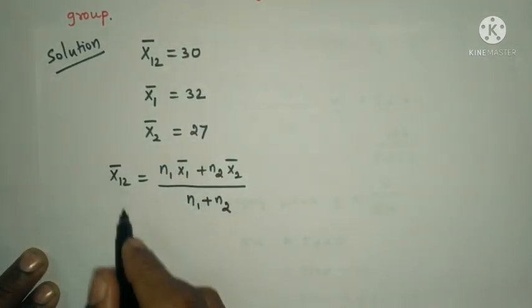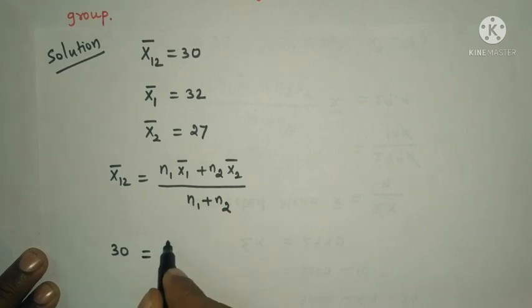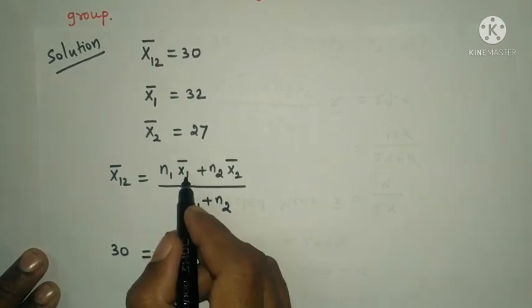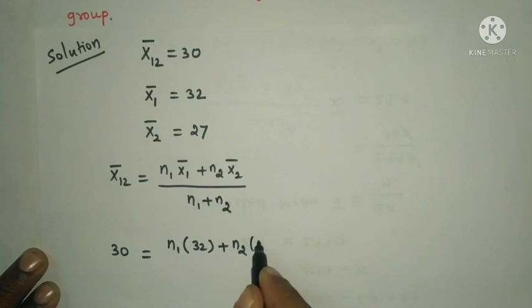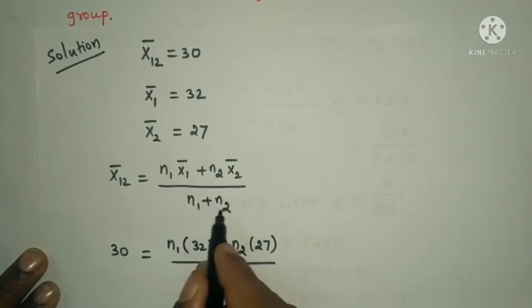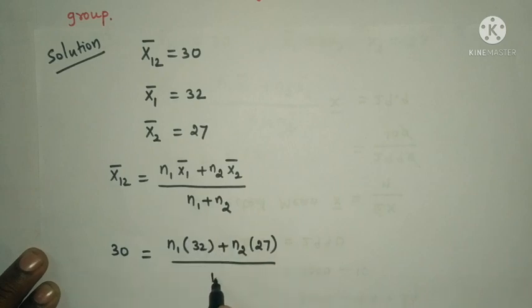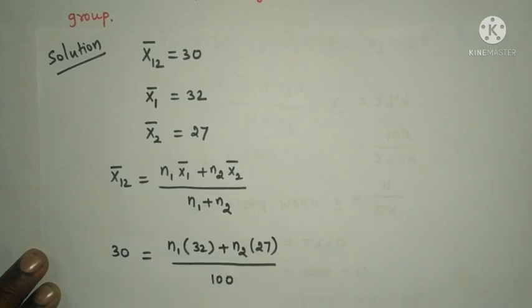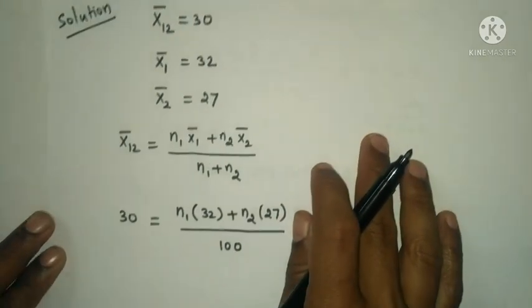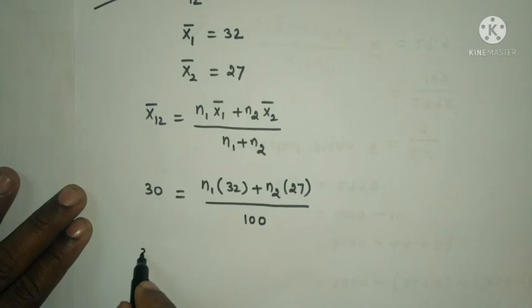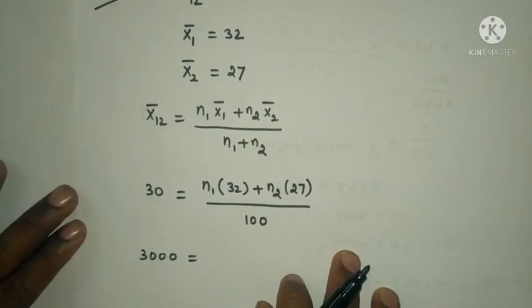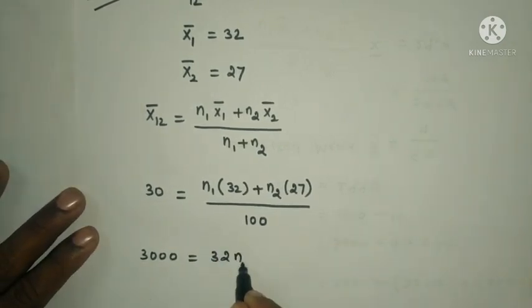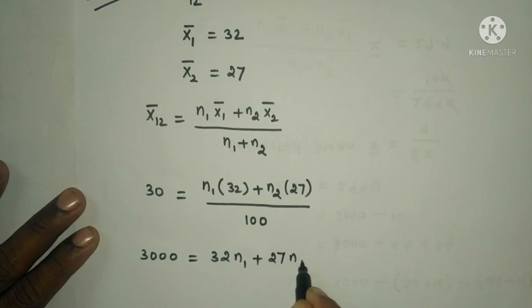Substituting values: 30 = (n₁ × 32 + n₂ × 27) / (n₁ + n₂). So 3000 = 32n₁ + 27n₂. This is equation number 1.